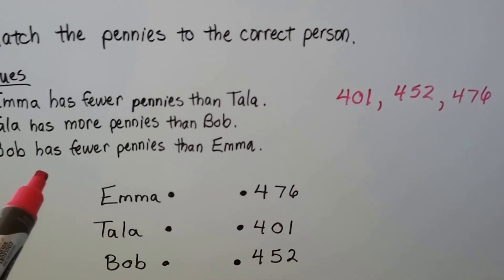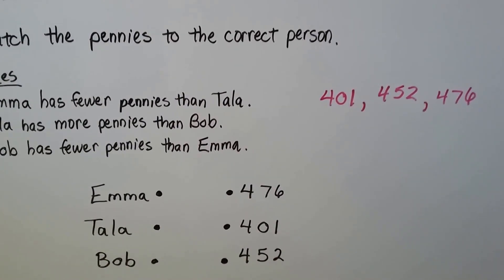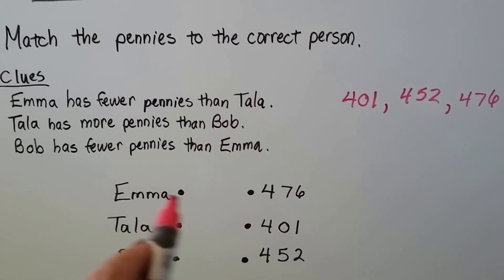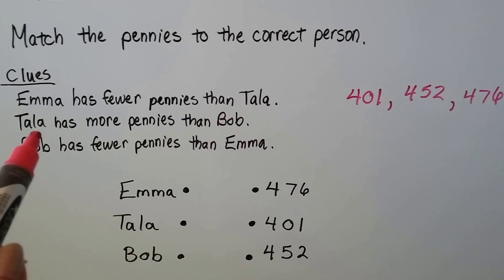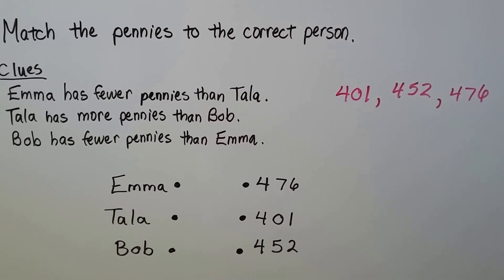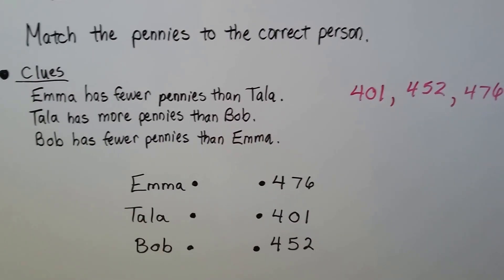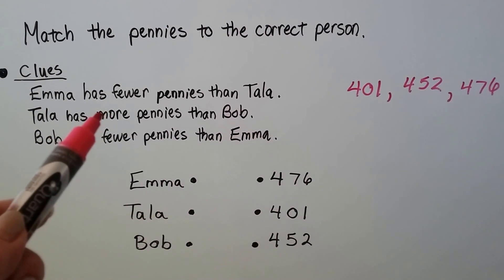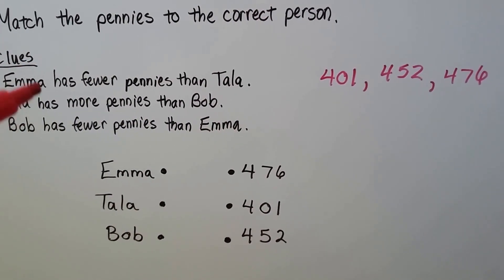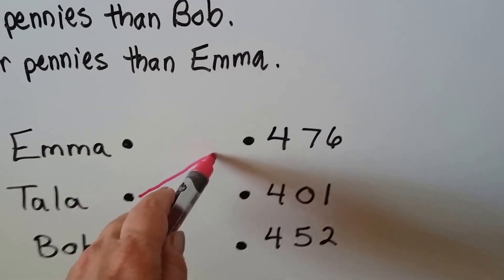The clue says Emma has fewer pennies than Tala. So if Emma has fewer than Tala, she can't have the most — 476 is not Emma. The next clue says Tala has more pennies than Bob. So Tala has more than both Emma and Bob, which means both Emma and Bob have fewer than Tala. Tala must have the most, so Tala has 476.